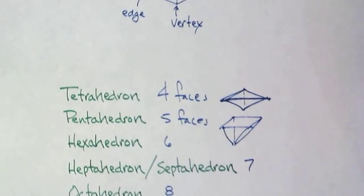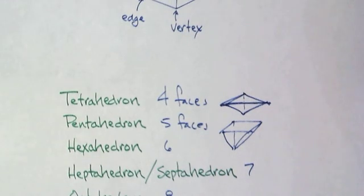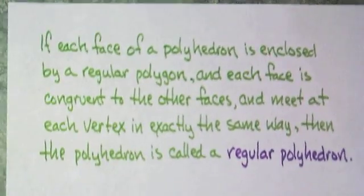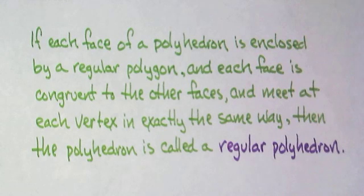If, though, let's get a little bit more specific. If each face of a polyhedron is enclosed by a regular polygon, and each face is congruent to the other faces and meet at each vertex in exactly the same way, then the polyhedron is called a regular polyhedron. Just like a regular polygon, where every angle's the same and every side's the same, a regular polyhedron—every face is the same and they meet the same way.